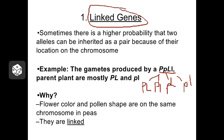However, in nature, these types of plants mostly produce the gametes containing big P big L and little p little l. Why is that? Well, this occurs because the genes for characteristics P and L are linked together — they're located on the same chromosome, and they're located pretty close together.